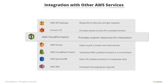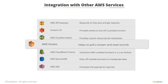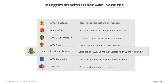AWS CloudFormation: Lambda can provide custom resources to interact with either AWS services that may not have CloudFormation support, your own tooling, or other third-party services. AWS Kinesis: Lambda can be set up to poll a stream, read records from the stream, and perform manipulations. AWS CloudWatch Events: this integration is best used for scheduling AWS functions in a cron-like fashion.